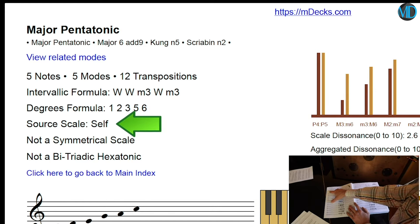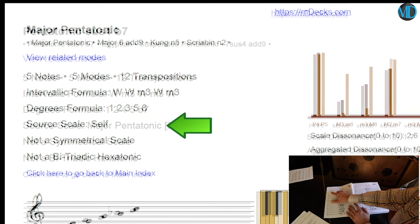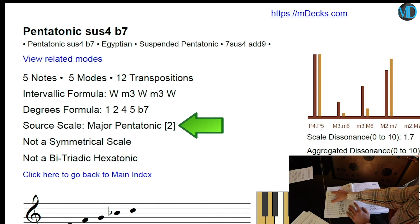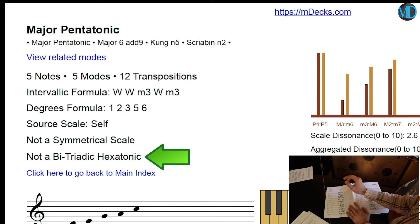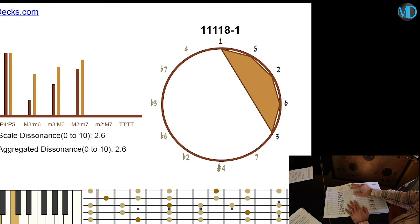It will tell us here next the source of this scale. Now, since we are looking at the source, it says self. If we're looking at a mode of this source, it would just merely say major pentatonic. It is not a symmetrical scale, and it is not a bi-triadic hexatonic scale either. On the right side, we have the graph that represents our scale superimposed into the circle of fifths, with the notes labeled as degrees rather than alphabetical note names.